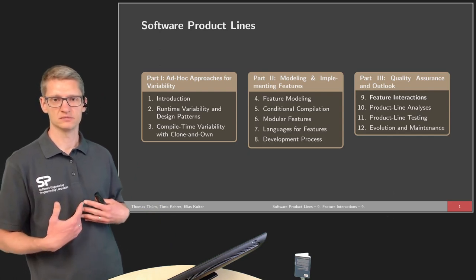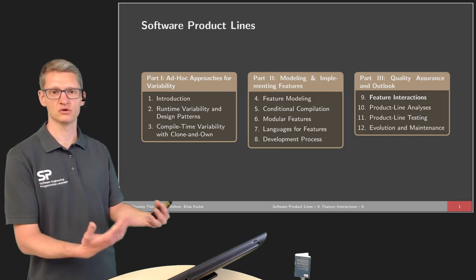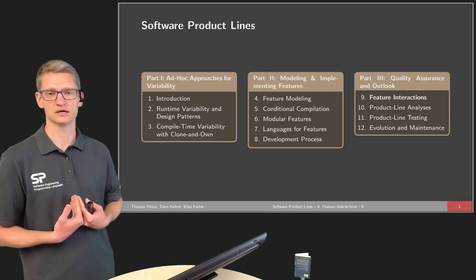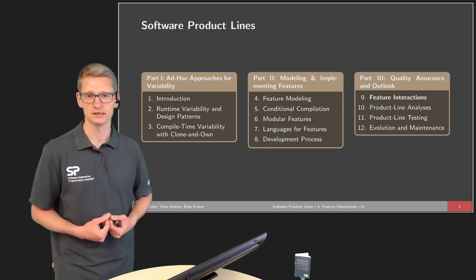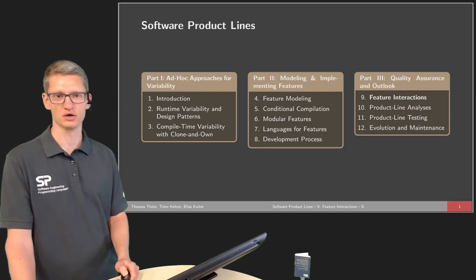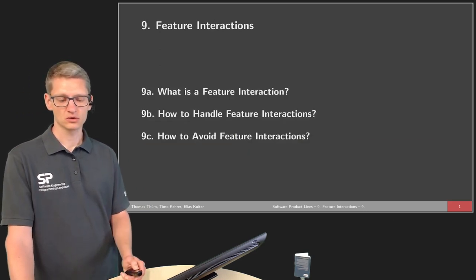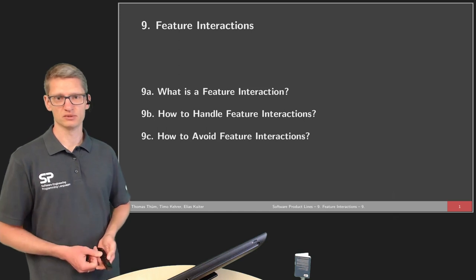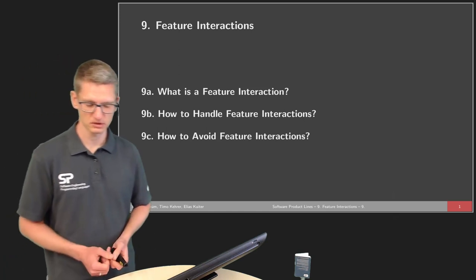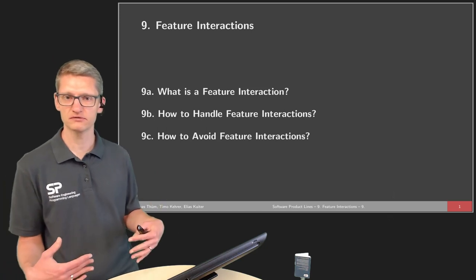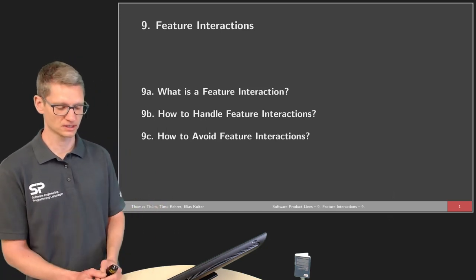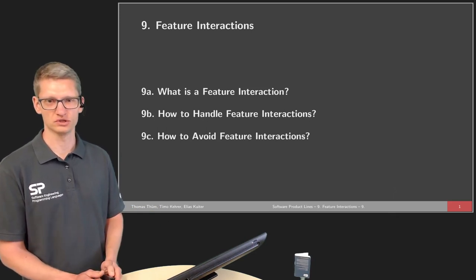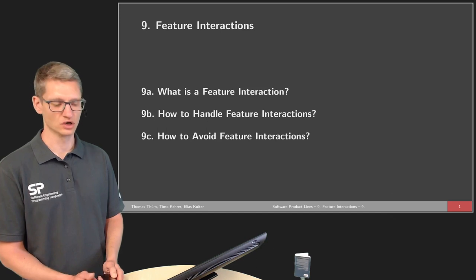This lecture gives the introduction and motivation also for the next two lectures, where we want to identify how to analyze and test product lines in a way that ensures there are no feature interactions, or reduces the amount of feature interactions. In this lecture, we will cover what a feature interaction is and why we should care, why it is a problem for software product lines, how to handle and implement feature interactions, and in the third part, a brief overview of how to avoid feature interactions.